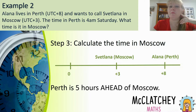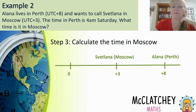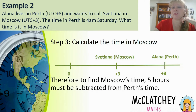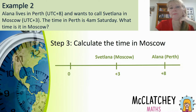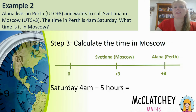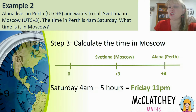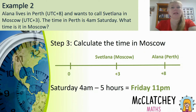We know Perth is five hours ahead of Moscow — that's important to get right, and the timeline visual shows me that Alana is ahead and not behind. If it's 4am in Perth, Moscow is five hours back the other way, so I subtract five hours from Perth's time. Four hours takes me back to midnight, and one more hour takes me back to 11pm the day before on Friday. It's always important to state both the day and the time in your answer, because sometimes it is a different day.